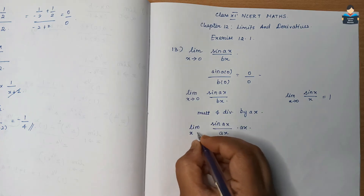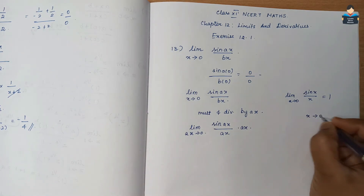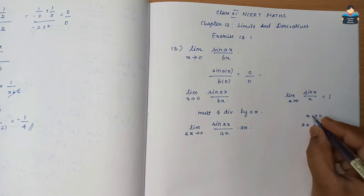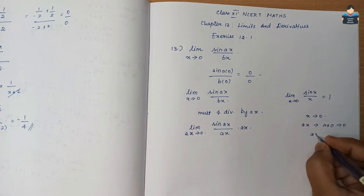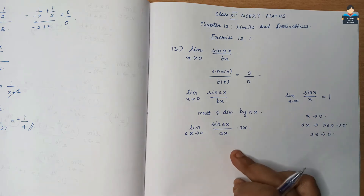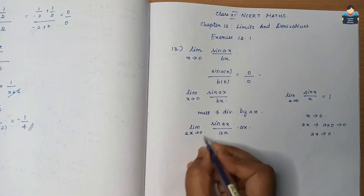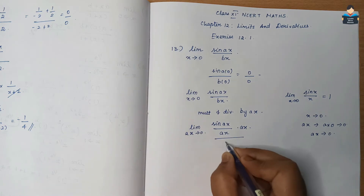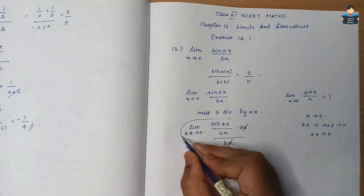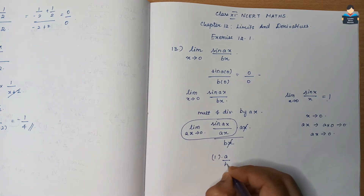Using the formula, limit x tends to 0 of sin(ax)/bx. When x tends to 0, ax also tends to 0. This is of the form of the identity limit sin(θ)/θ = 1. So we get 1 × a/b, which is a/b.